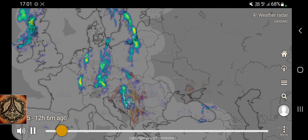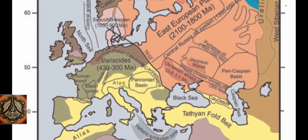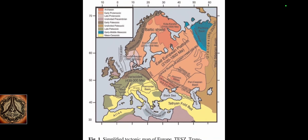Simplified tectonic map of Europe — the TSC, the Trans-European Structure Zone. According to this map, there is a border between there.